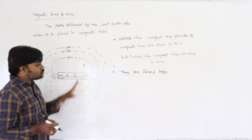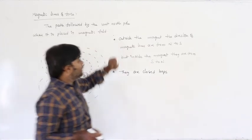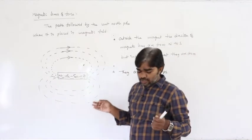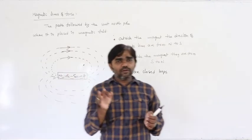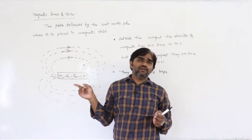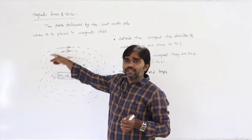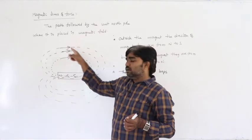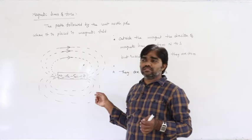A uniform magnetic field means magnetic lines of force are uniform per unit area, while a non-uniform magnetic field means they vary from place to place. The key definition: magnetic lines of force are the path followed by the unit north pole when placed in an external magnetic field. Since a unit north pole does not exist, we use a compass needle — the direction shown by the magnetic needle gives the direction of magnetic lines of force.